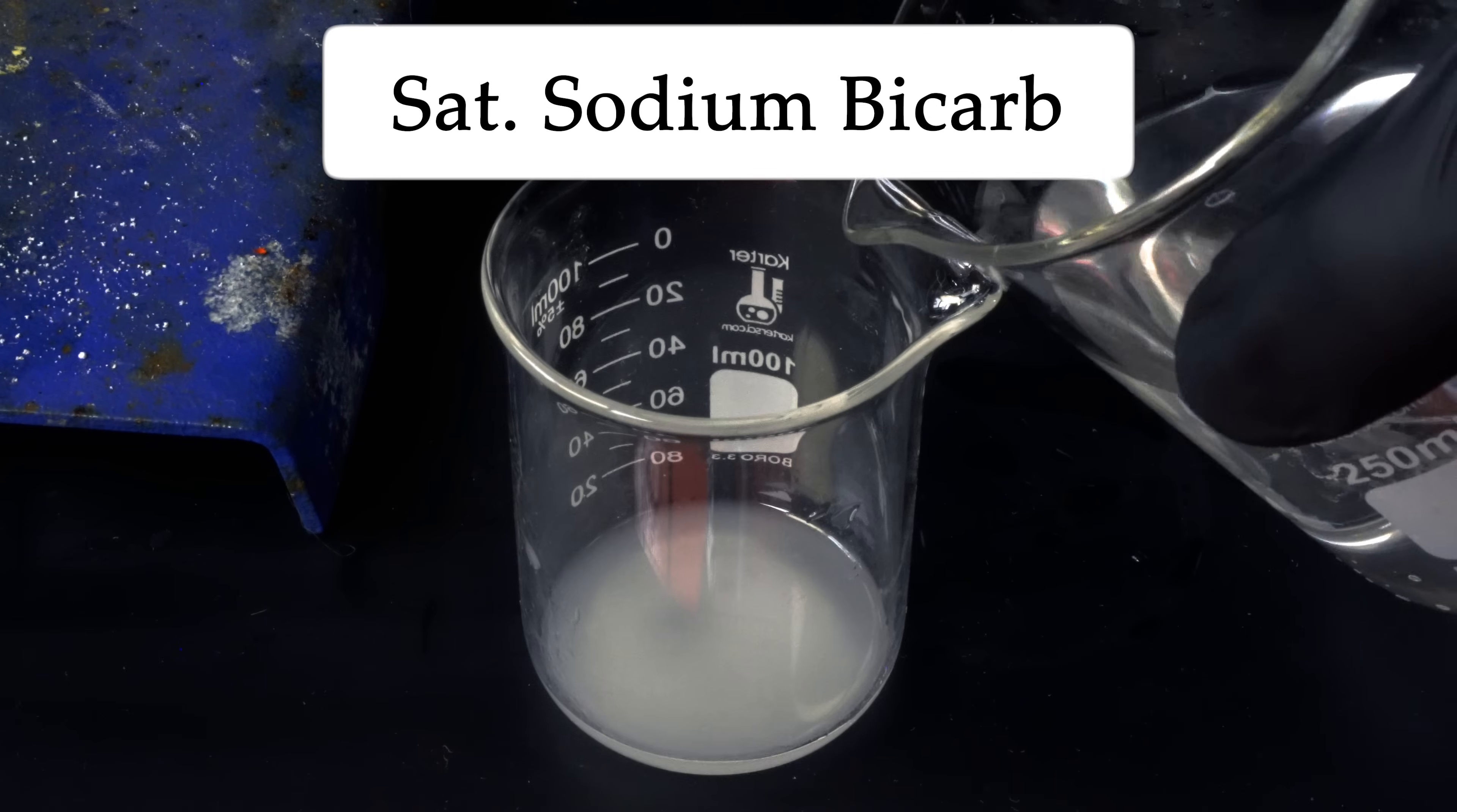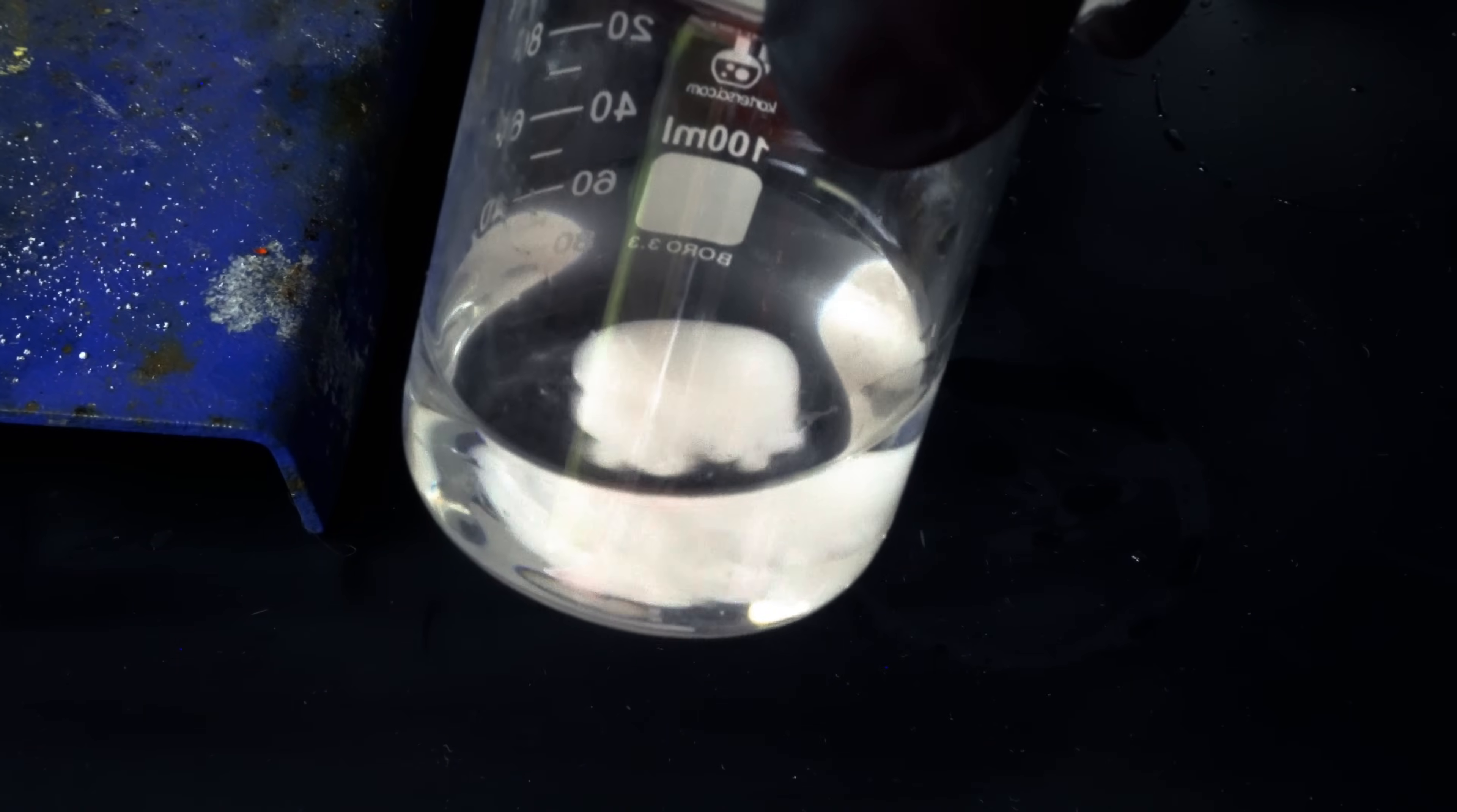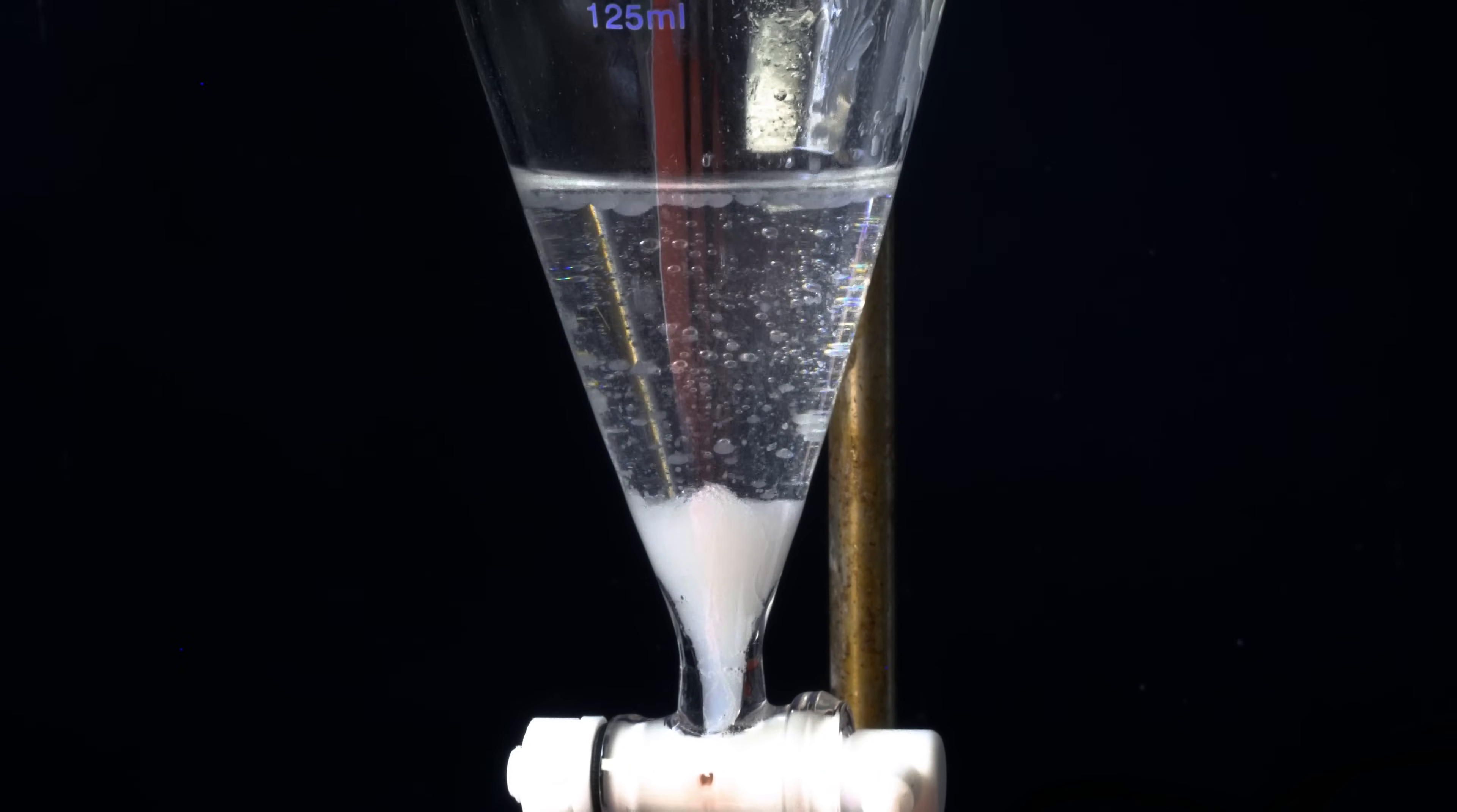The first washing step is going to be a saturated sodium bicarbonate solution to make sure that we get any acidity out of the nitroglycerin. A stir bar is definitely more preferred for this method, but just shaking the beaker around seemed to work. And like before, we need to pour this back into the separatory funnel and collect the nitroglycerin. Nitroglycerin is much more dense than water, so it will always go to the bottom.